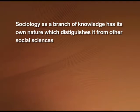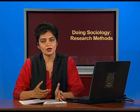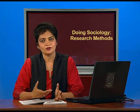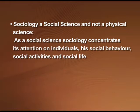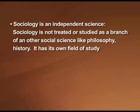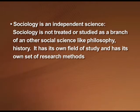Sociology as a branch of knowledge has its own nature which distinguishes it from other social sciences. First, sociology is a social science and not a physical science. Physical sciences deal with matter, and social sciences deal with man. As a social science, sociology concentrates its attention on individuals, their social behavior, social activities and social life. Sociology is also an independent science — it is not treated as a branch of any other social science like philosophy or history. It has its own field of study and its own set of research methods.